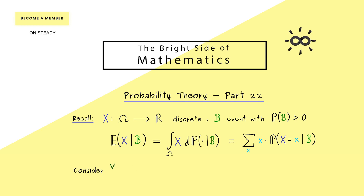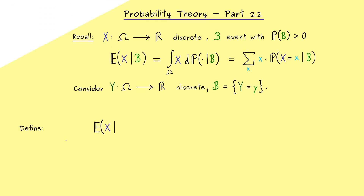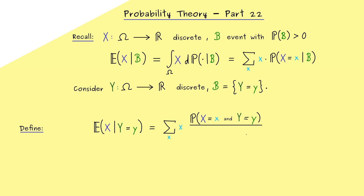Now assume that we have a second random variable which should also be discrete. Then our event B should be substituted by Y equals the value y. This means instead of E[X | B] we write E[X | Y = y]. We just choose a very special event for B now. For this one, the formula from above is a very good fit, because we can write the conditional probability as an intersection and as a quotient. This numerator is often called the joint probability mass function of the two random variables — in short, the joint PMF of X and Y.